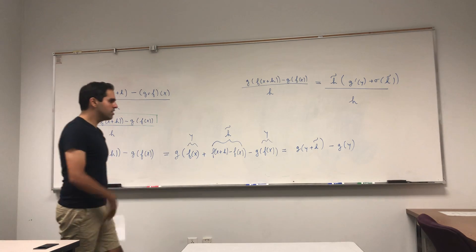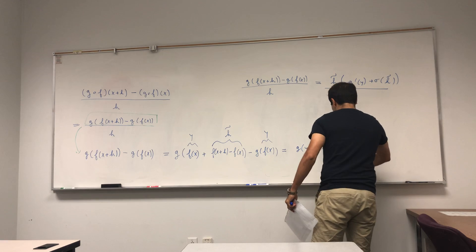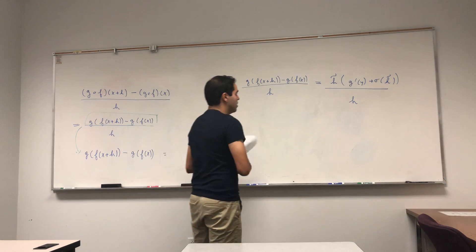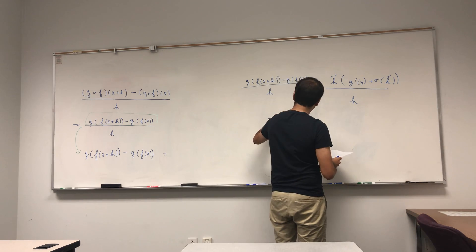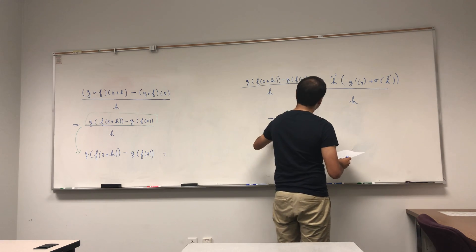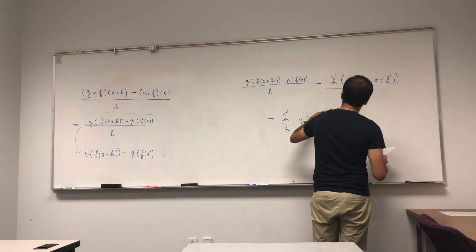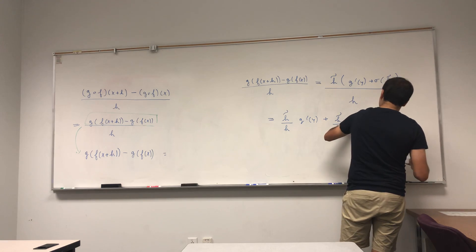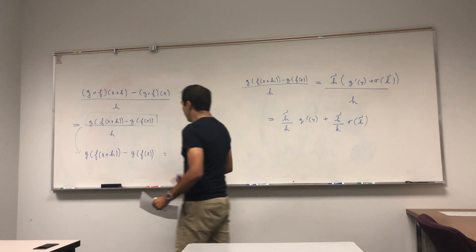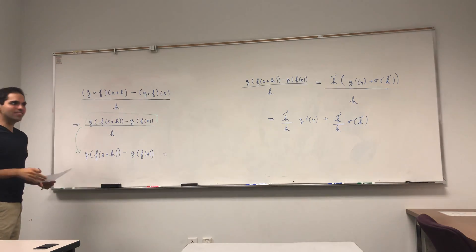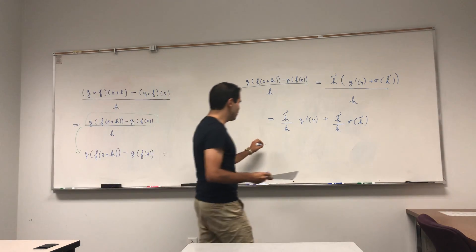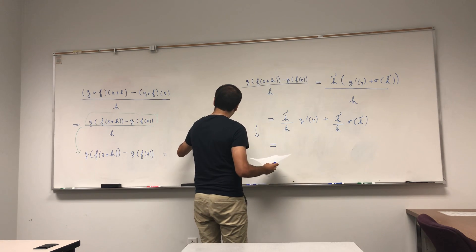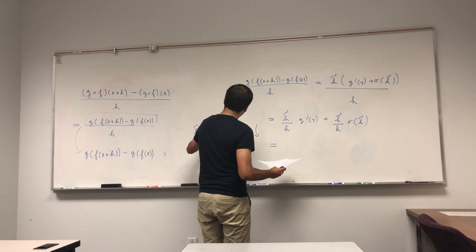Now let's focus on the full difference quotient: g of f of x plus h minus g of f of x, divided by h, equals h-tilde times g prime of y plus sigma of h-tilde, all over h. Expanding this out: that equals h-tilde over h times g prime of y, plus h-tilde over h times sigma of h-tilde.